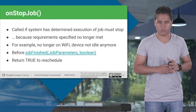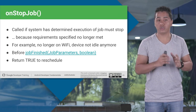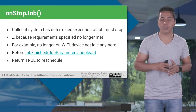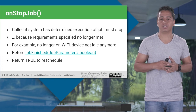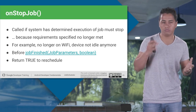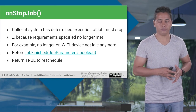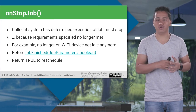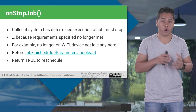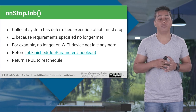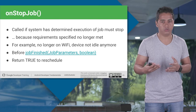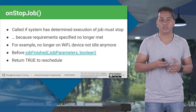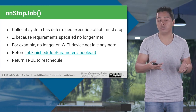OnStopJob will stop your job only when the requirements specified are no longer met. For example, if an app update was downloading because Wi-Fi was on, but the user left the Wi-Fi zone or turned off Wi-Fi, then OnStopJob is called. Before OnStop, if your job is getting finished, you need to call JobFinish and pass the Job parameters and a Boolean value. OnStopJob also returns a Boolean: true if you want to reschedule the job — so next time you come back into Wi-Fi zone it starts again — or false if you don't.